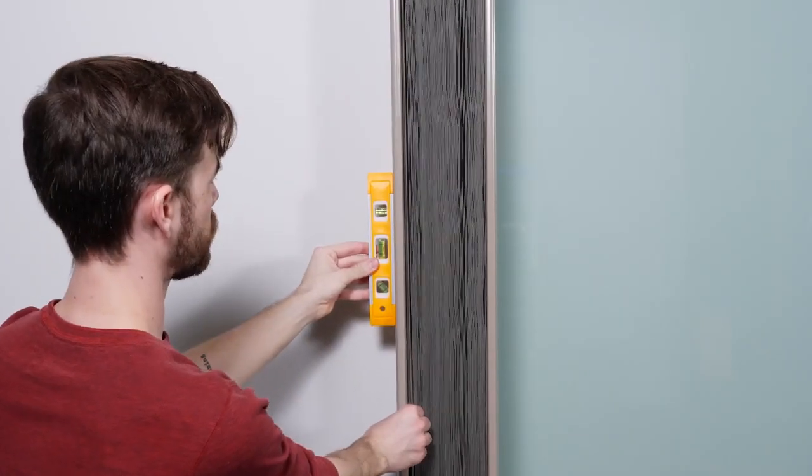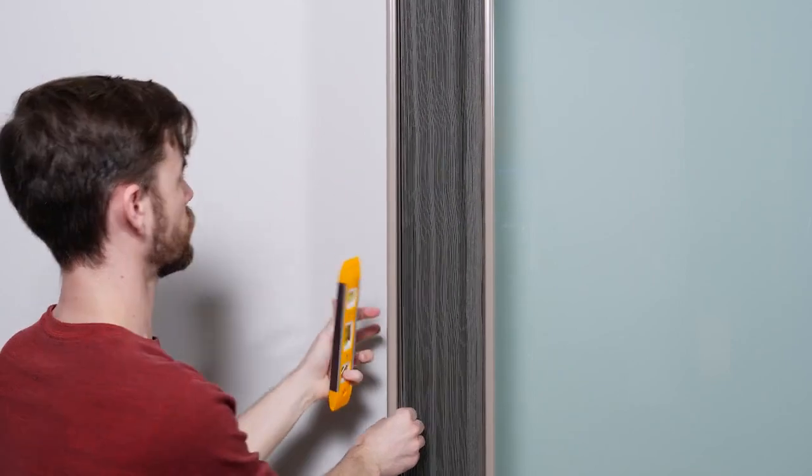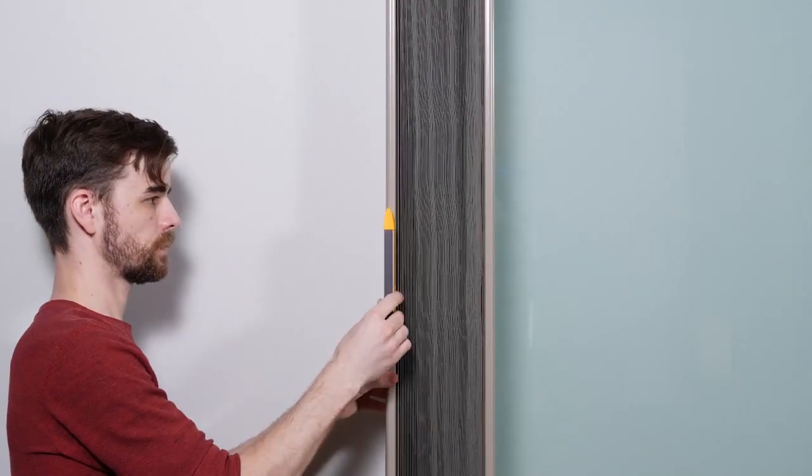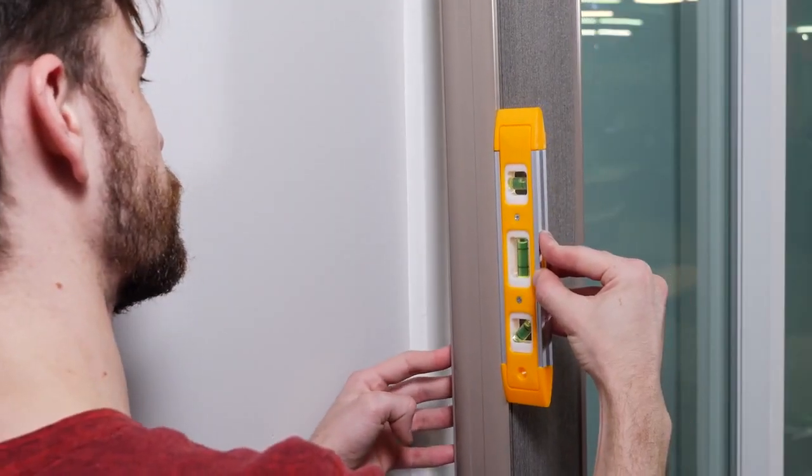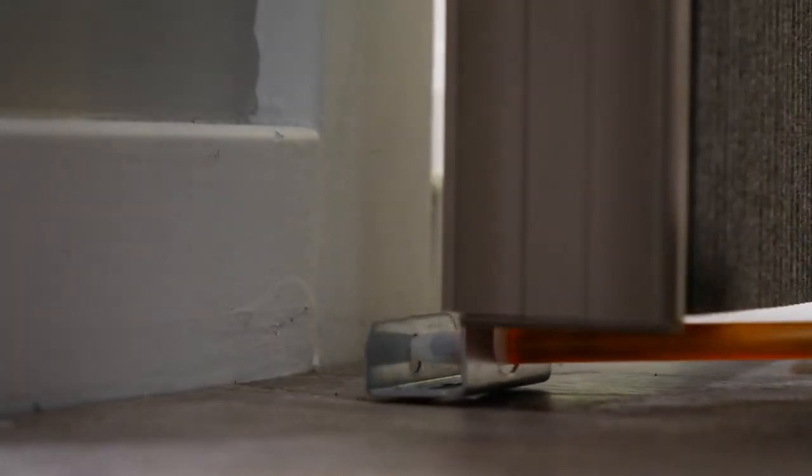The next step is to mount the bottom of the stationary rail. Use a level to make sure it's vertical from both the side view and the front view. While the rail is level, use your pencil to mark through the bottom bracket onto your mounting surface.